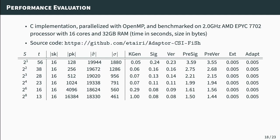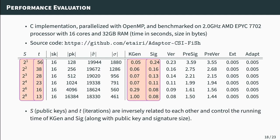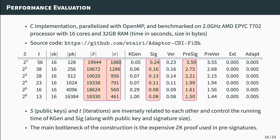We also evaluated the performance of our isogeny-based adapter signature scheme using a parallelized C implementation. The parallelization is motivated by the fact that the basic identification scheme must be repeated multiple times for adequate security, and all repetitions are independent and amenable to parallelization. Note that s (number of public keys) and t (number of iterations) are inversely related: as s increases, t decreases, reducing signing time but increasing key generation time. The main bottleneck of our construction is the expensive zero-knowledge proof used in pre-signatures, visible from signing and pre-signing computation times and the sizes of pre-signature σ-hat and complete signature σ.